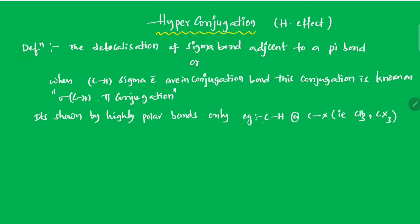It is shown by highly polar compounds like CH or CX, that means CH3 or CX3.